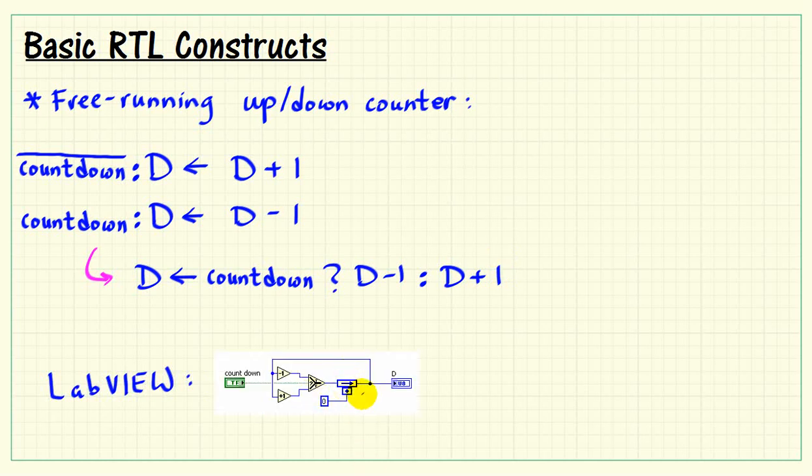Now in LabVIEW, we can consider the feedback node as our register. The data selector picks whether or not we have minus 1 applied or plus 1 applied to the value that's presently in D. It then passes that to the input of our register.